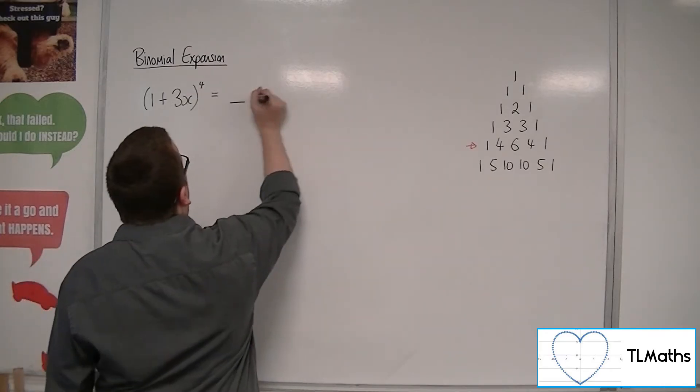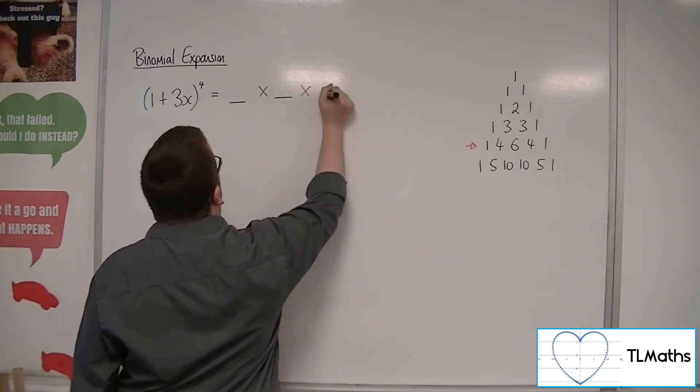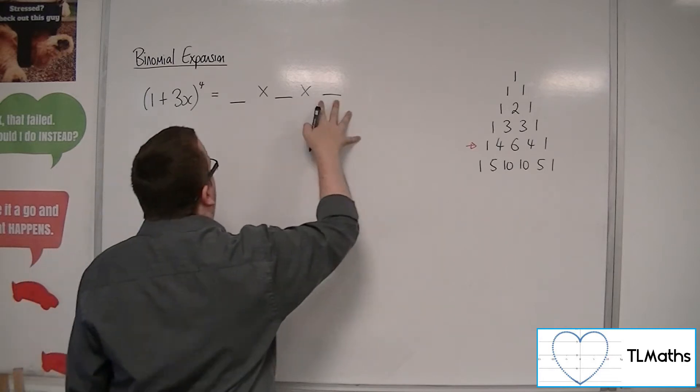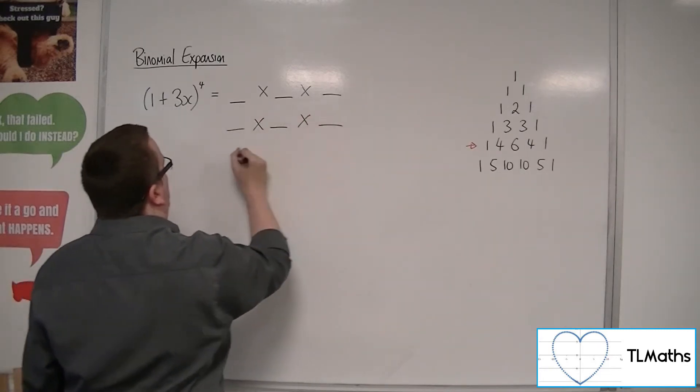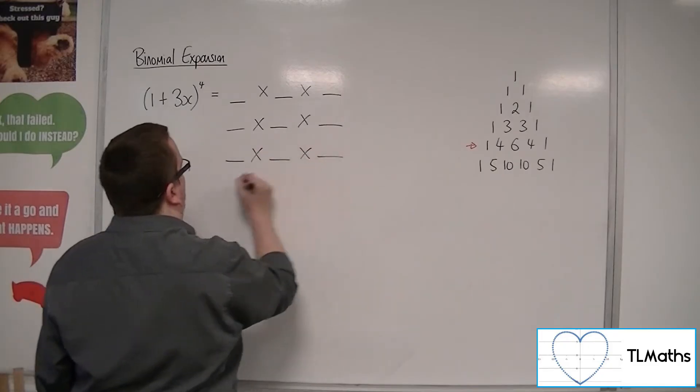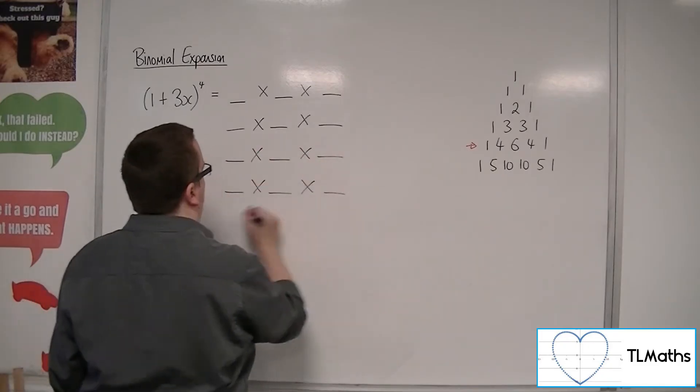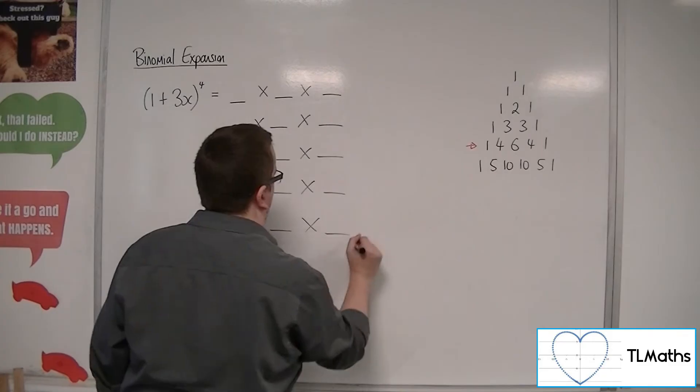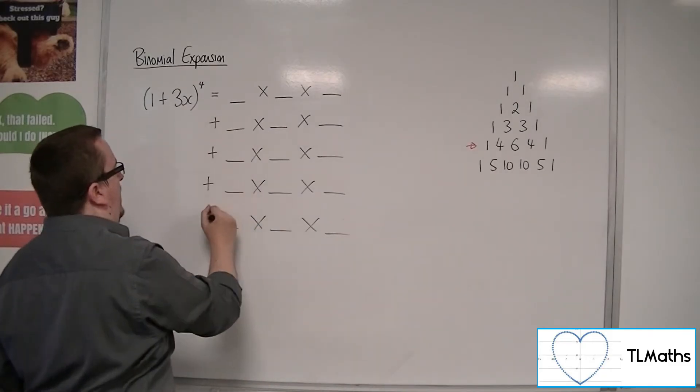Each term is made up of 3 pieces. So there's our first term, then second, then third, then fourth, then fifth. So we're going to add those together.